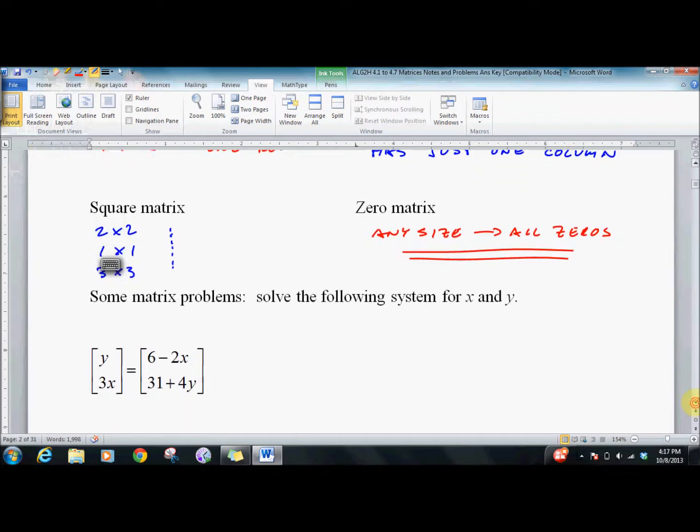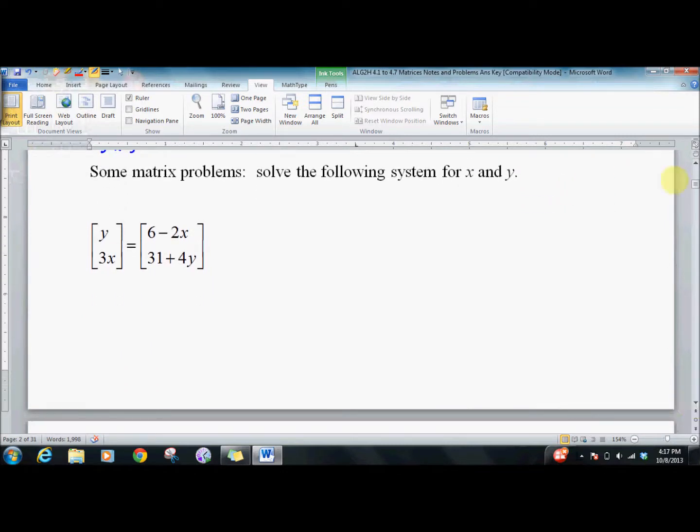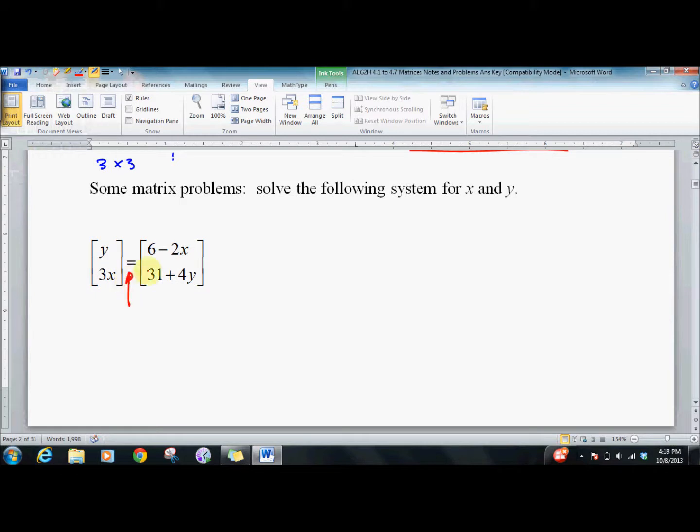Now we'll just do a problem involving matrix just so you can see how they work. This says they're equal. Therefore, y equals 6 minus 2x, and 3x equals 31 plus 4y. So we've translated two matrices that are equal to each other into a system of equations, two of them with two unknowns. So we can solve now.